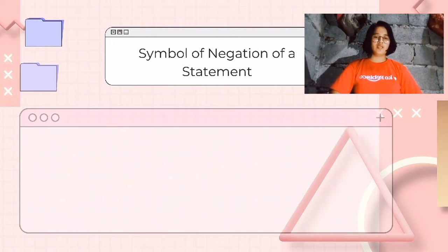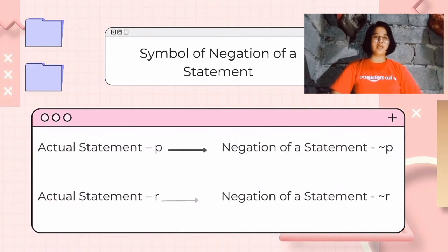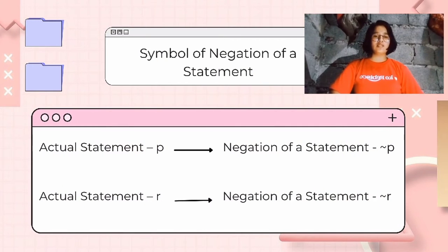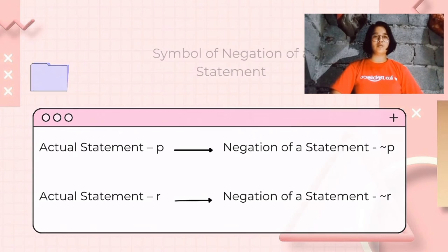Now, the symbol for negation: if the actual statement is denoted with p, the negation will be denoted by ~p. Similarly, if the actual statement is denoted with r, the negation will be denoted by ~r, and so on.